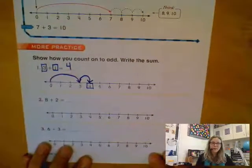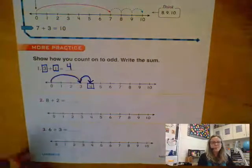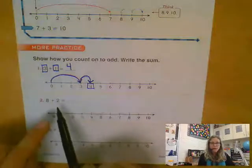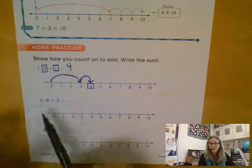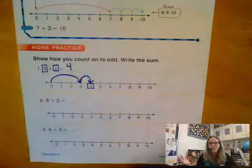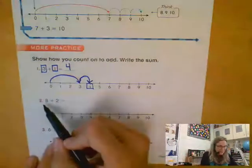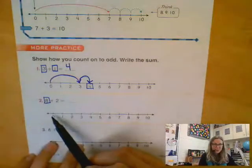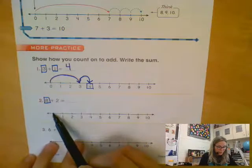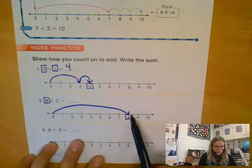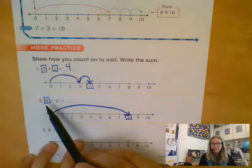Looking now at number two, remember we always start with our first jump is the bigger number. So whichever number is bigger, no matter whether it's the first or the second number, that should be our first jump. And then we count on the difference. So in this case, our first number is eight. So beginning at zero, we're going to take a giant jump all the way to the number eight. That's our first jump.